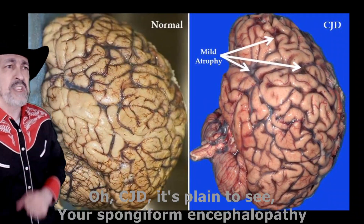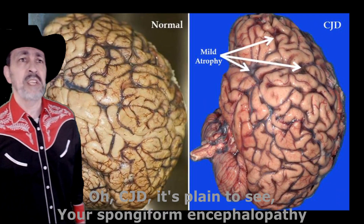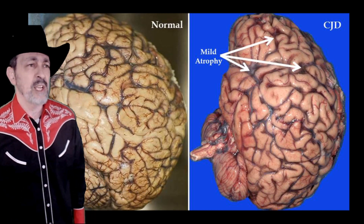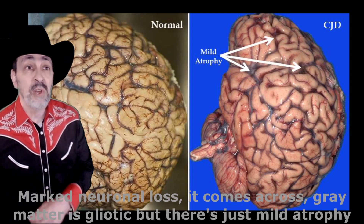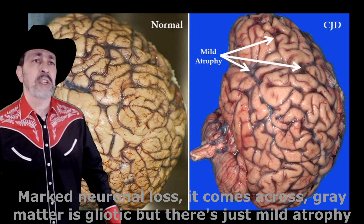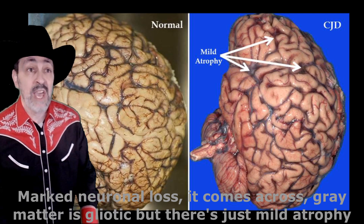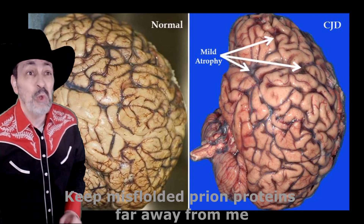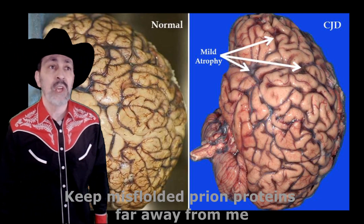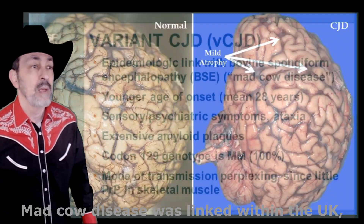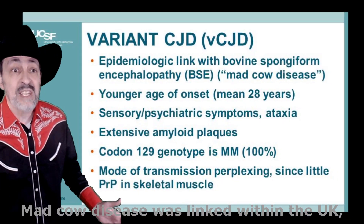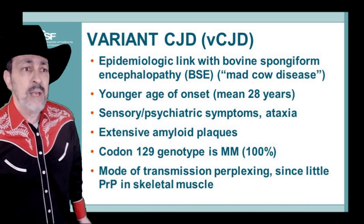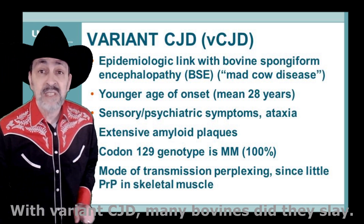The most CJD — it's plain to see. CJD: spongiform pattern, neuronal loss. Brain matter is spongiform, but there's just mild atrophy. Keep misfolded prion proteins far away from me. Bad cow disease was linked within the U.K. with variant CJD.